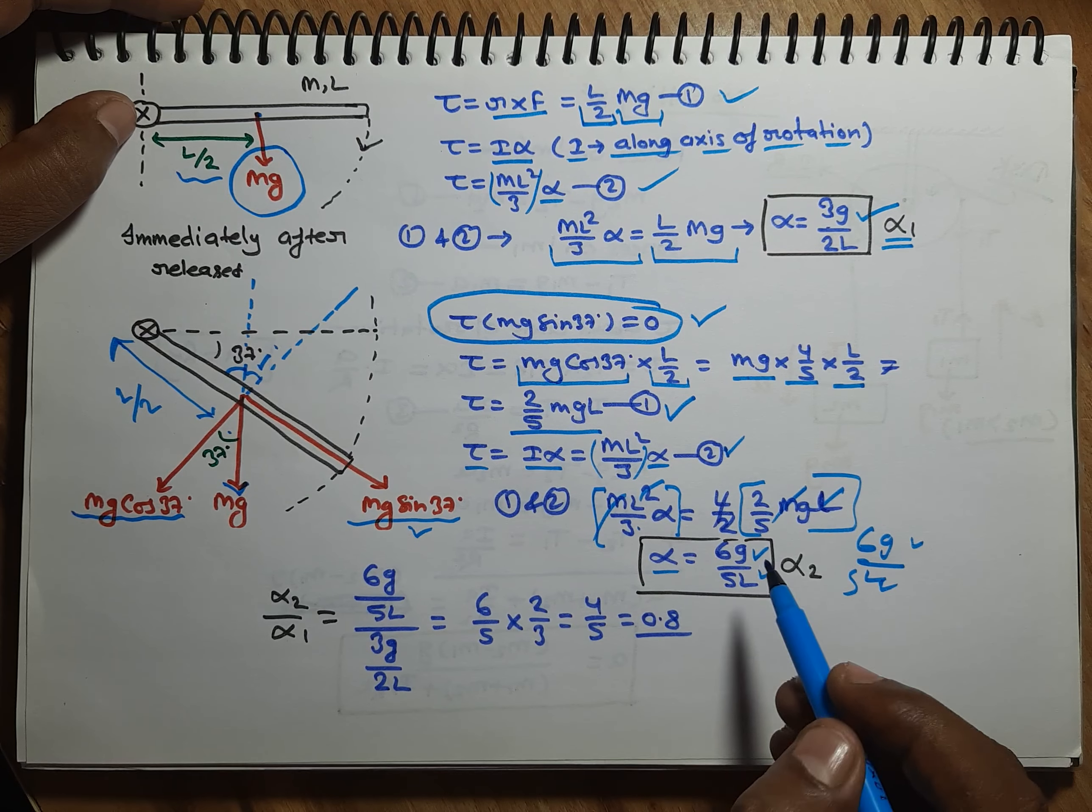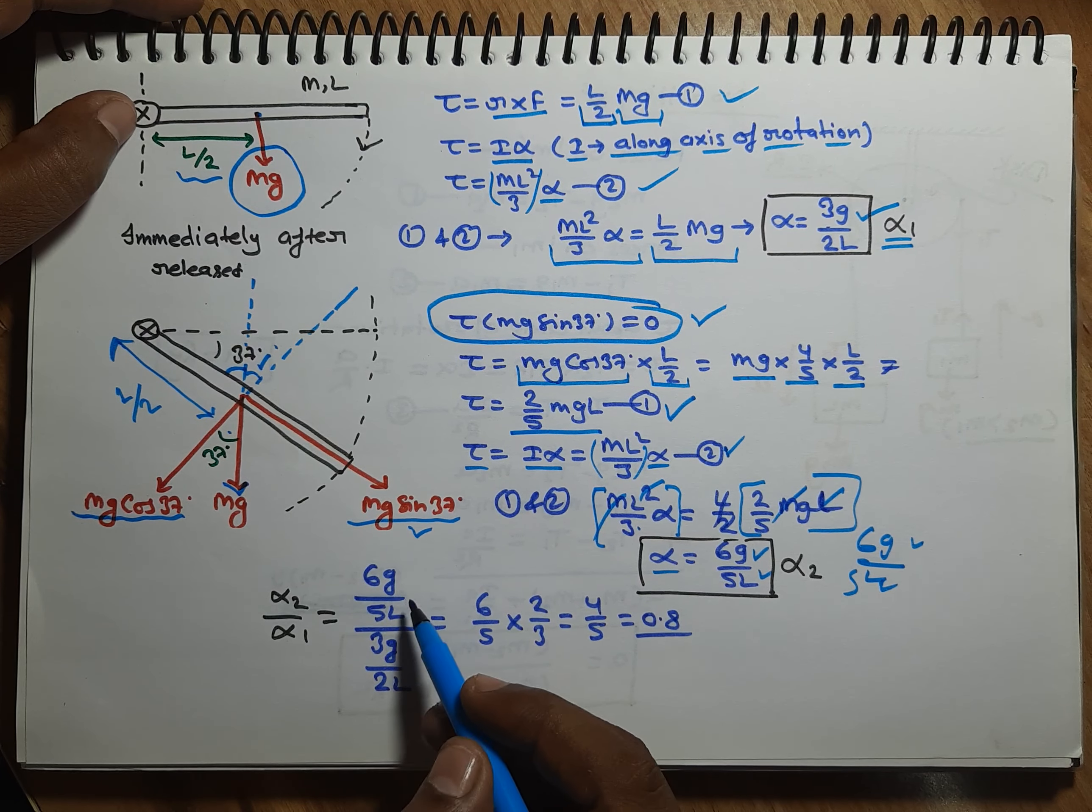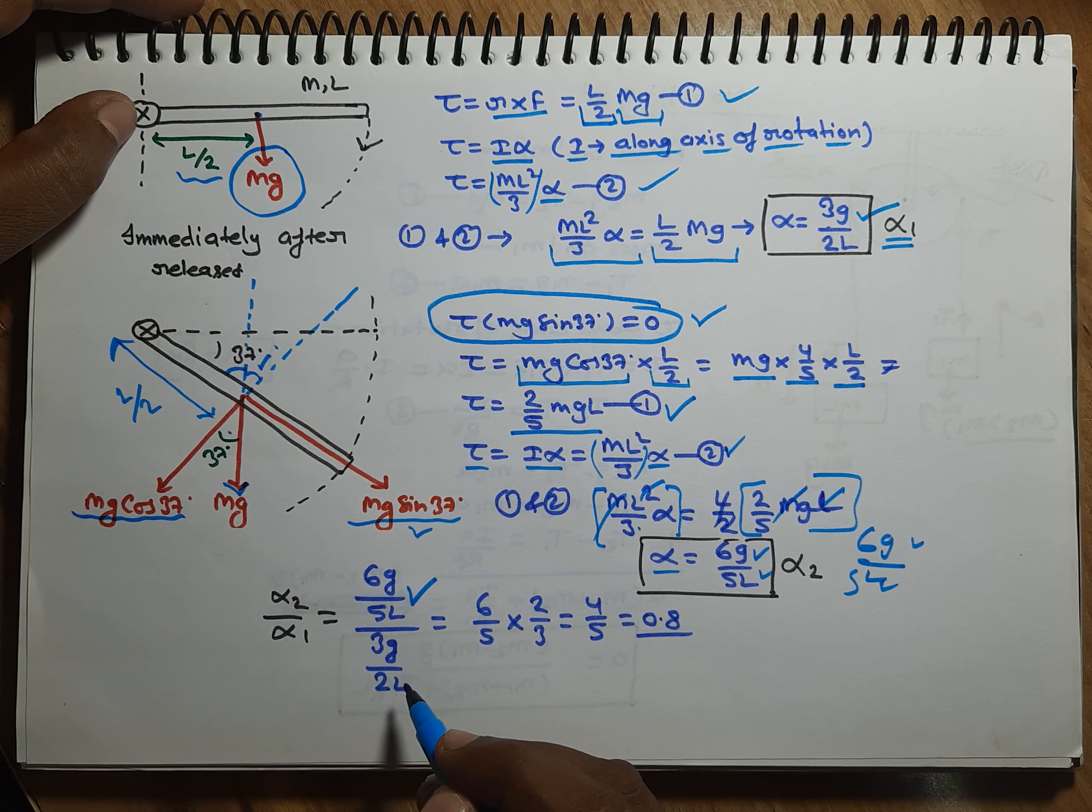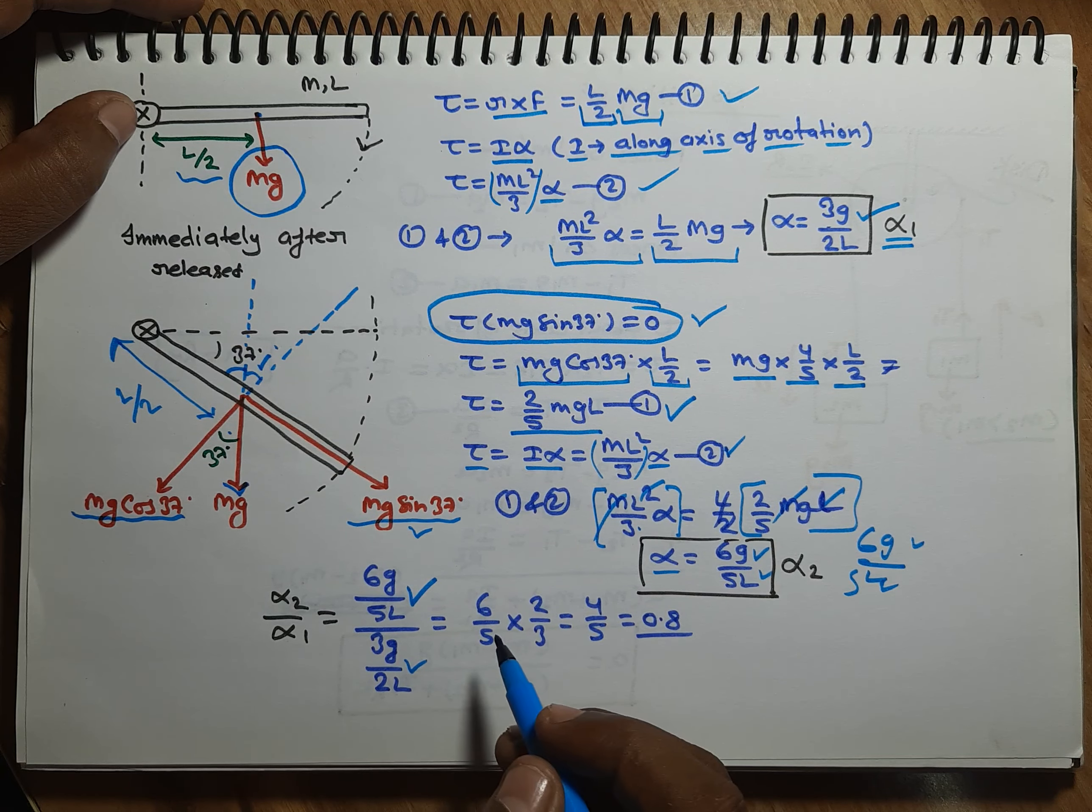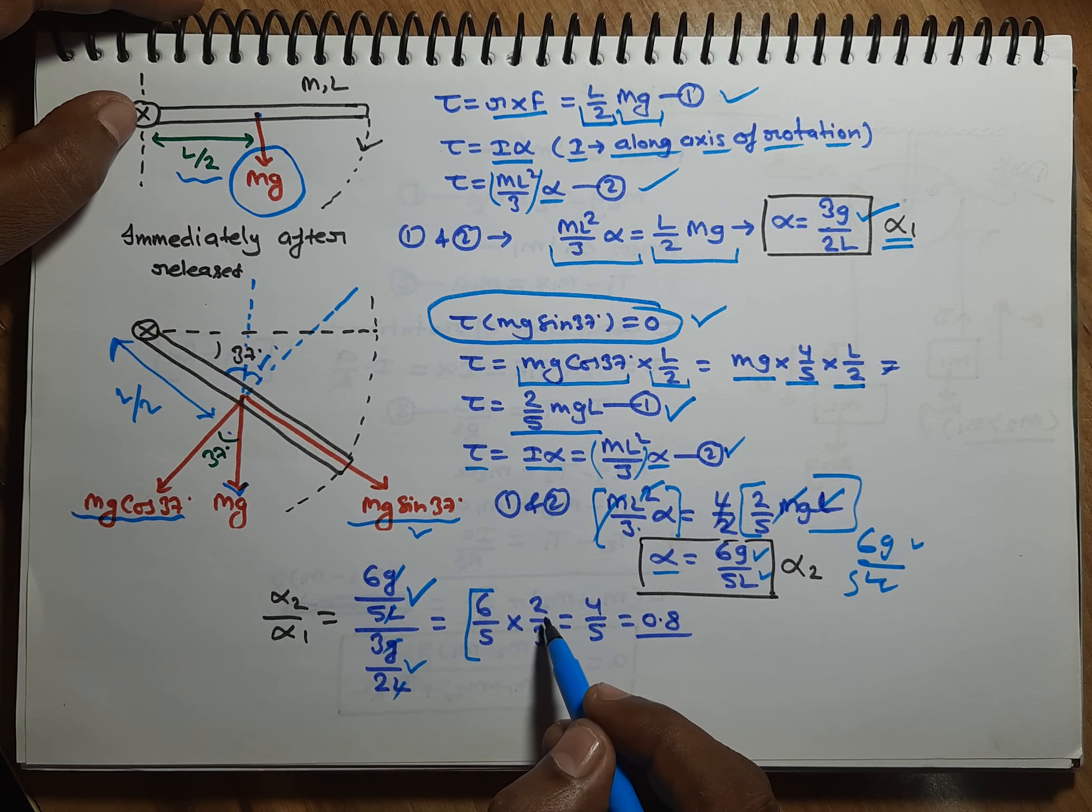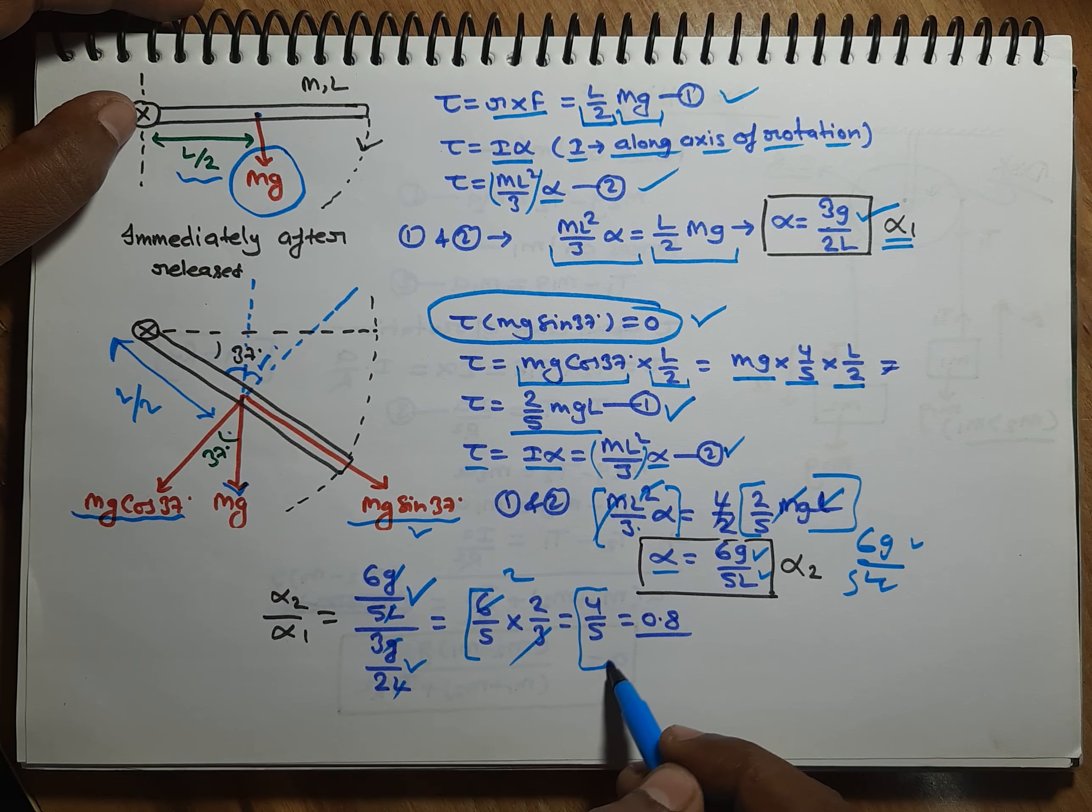Friends, α₂ by α₁ needs to be found. α₂ will be 6G by 5L, and α₁ will be 3G by 2L. L cancels with L, G cancels with G. So what will happen: 6/5 into 2/3. 3 and 6 cancel, so it becomes 2. So the value will be 4/5. The answer is 0.8.